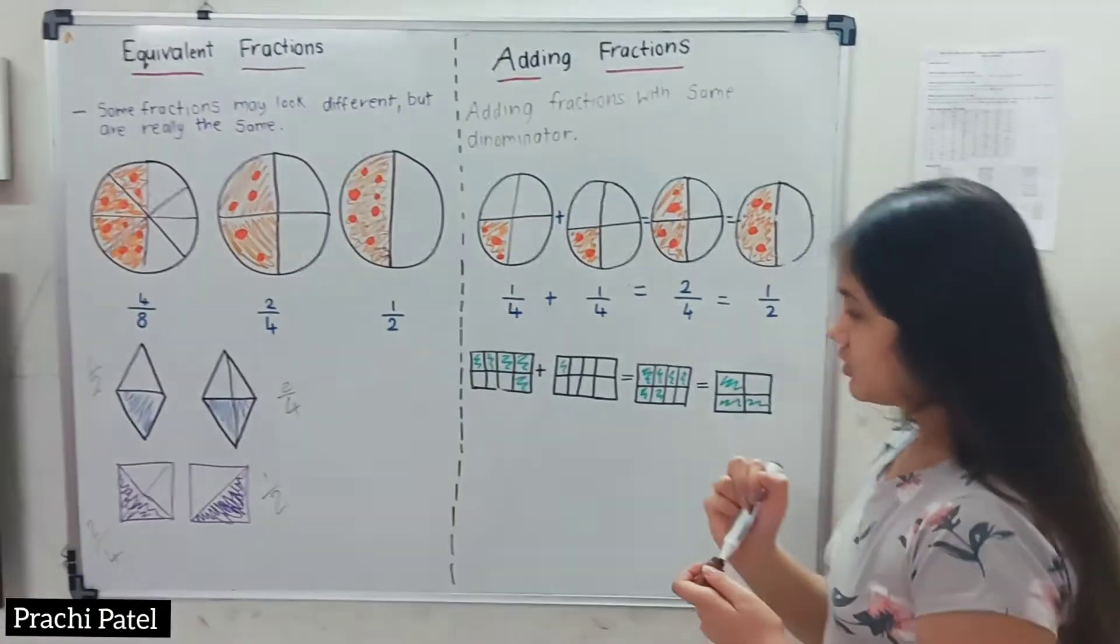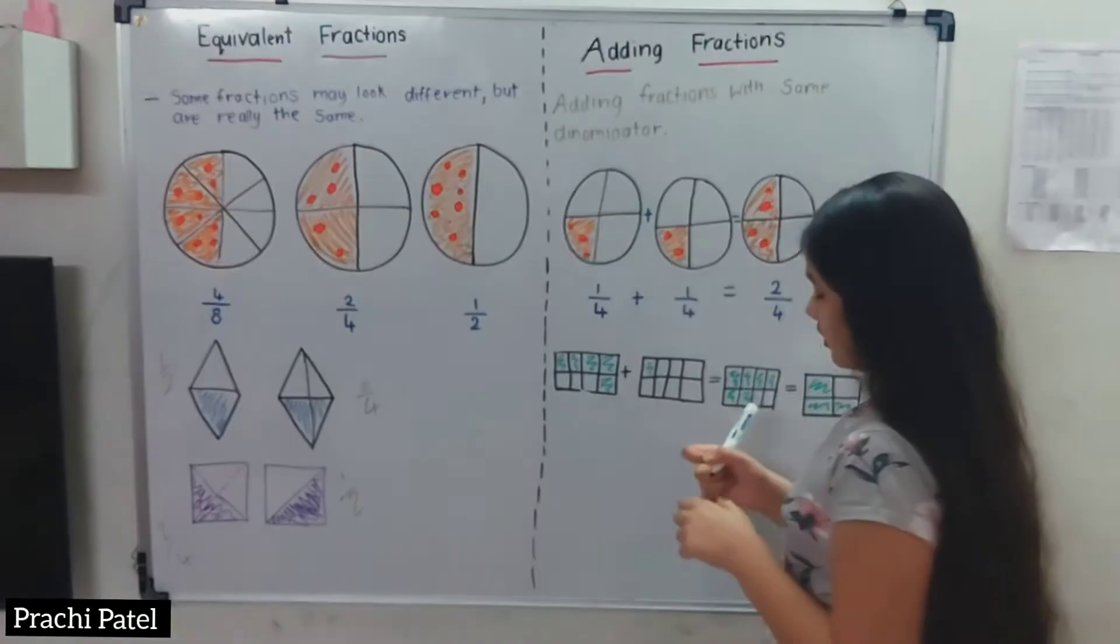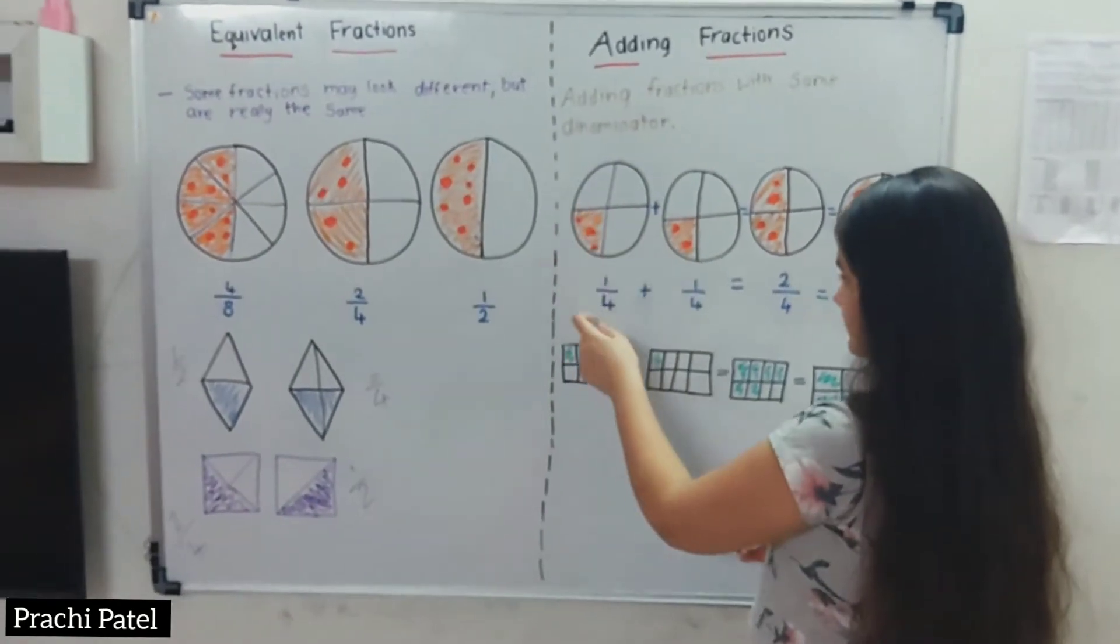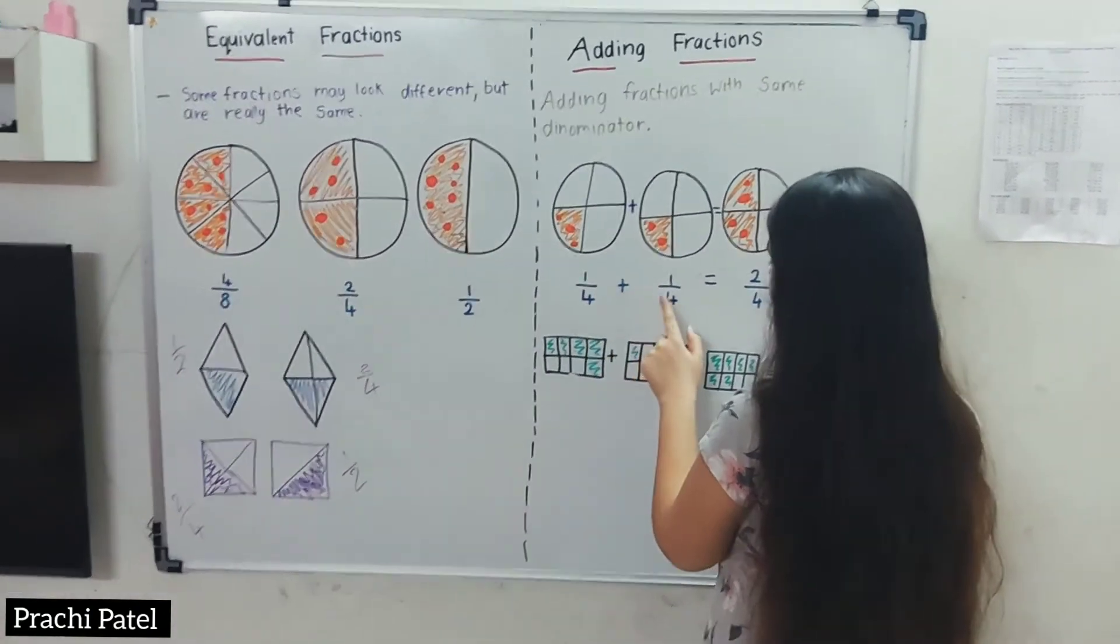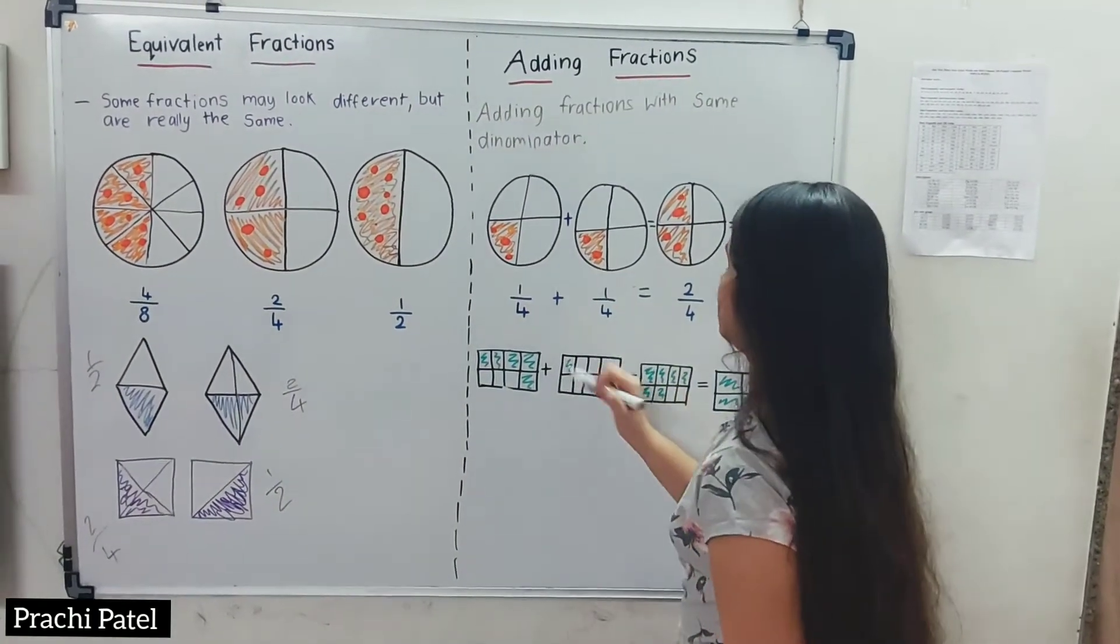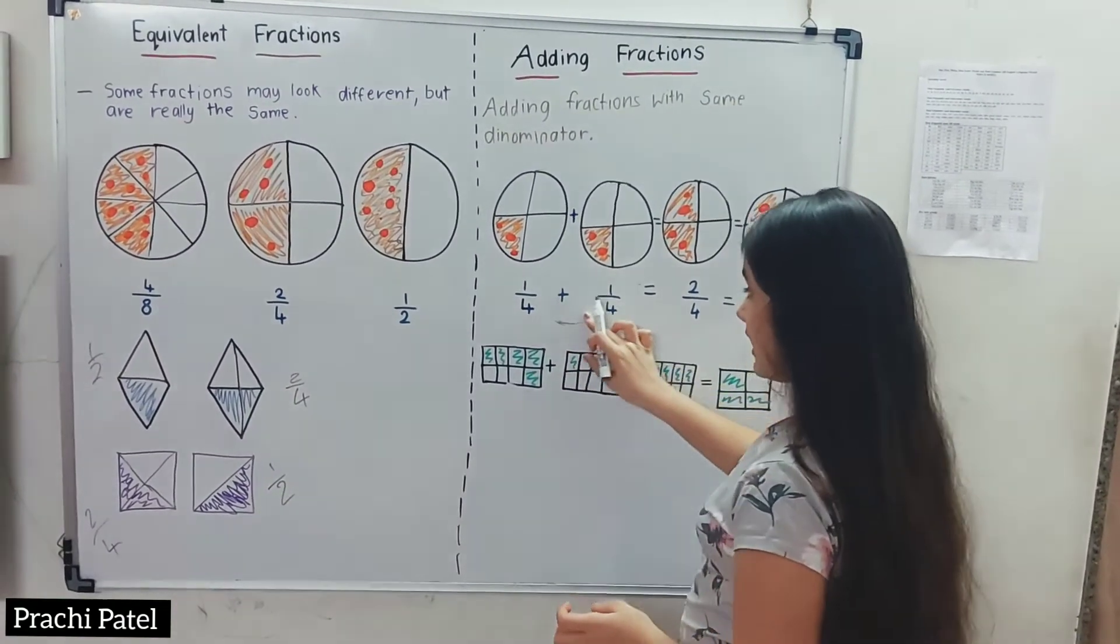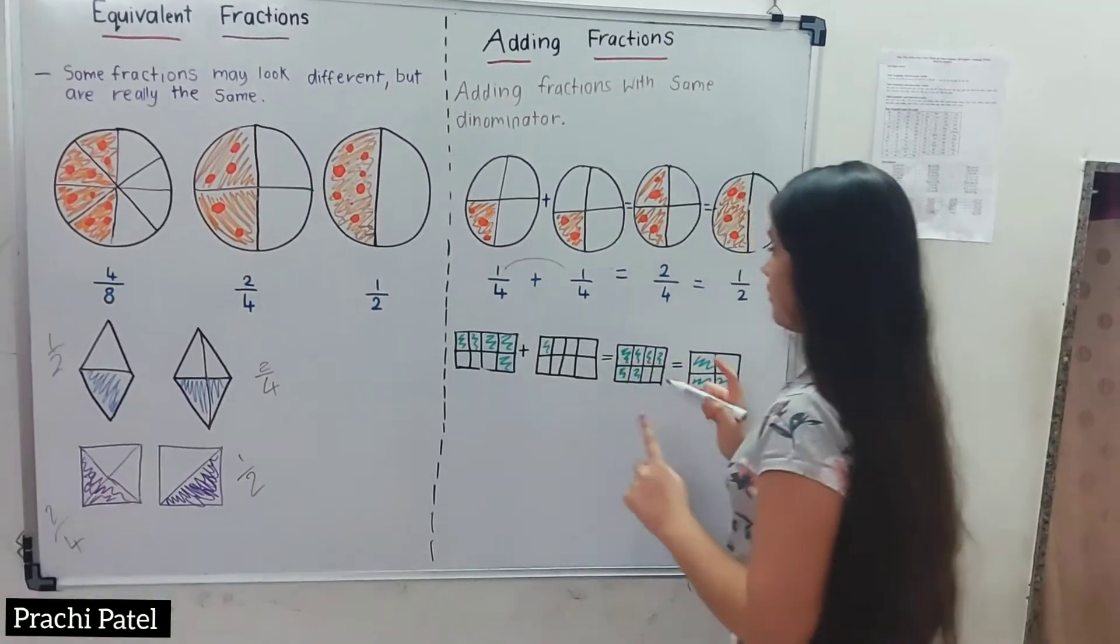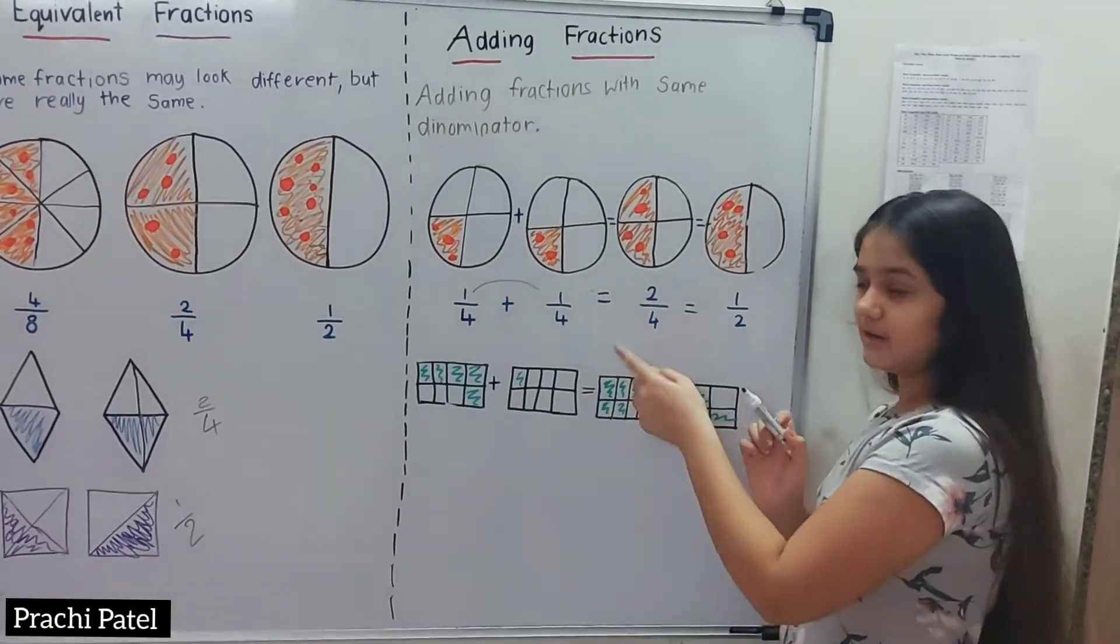Adding fractions with same denominators. For example, we have 1/4 plus 1/4. There are 4 pieces and 1 is eaten in each. When we have the same denominators, we don't add the denominators. We add the numerators, not the denominator.